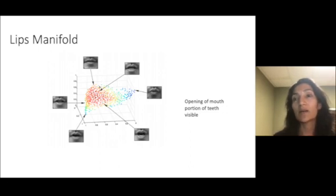One is the opening of the mouth and the second is the portion of the tooth visible. This gives this lips manifold a two dimensional intrinsic state space. It can be mapped out with just these three diffusion eigenvectors.